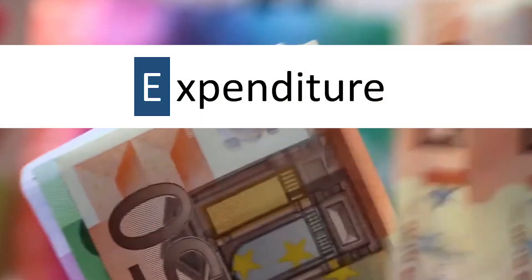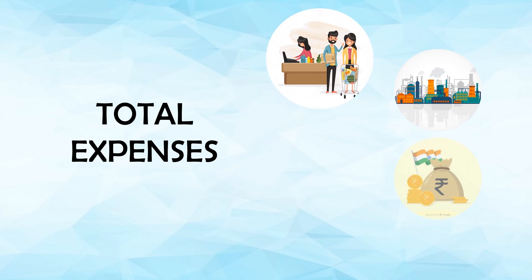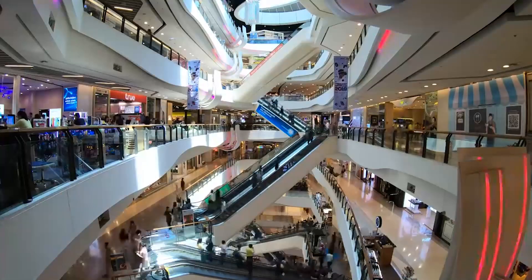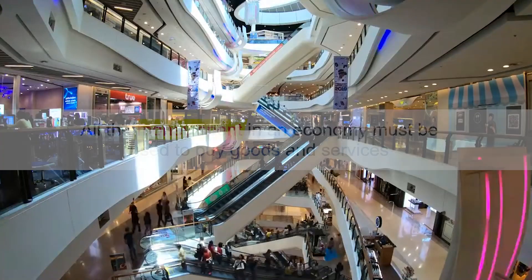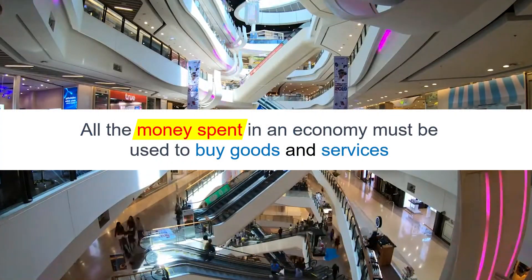The expenditure method looks at how people and businesses spend their money. It adds up everything spent in the country — what people buy, what businesses invest in, what the government spends, and what's bought and sold with other countries. This approach is based on the principle that all the money spent in an economy must be used to buy goods and services.